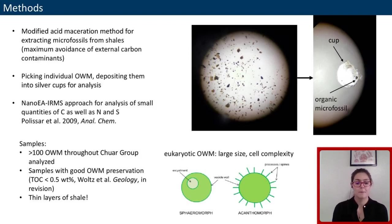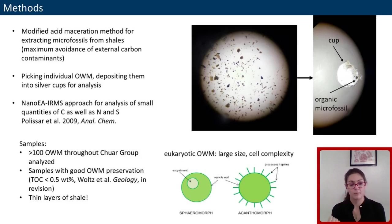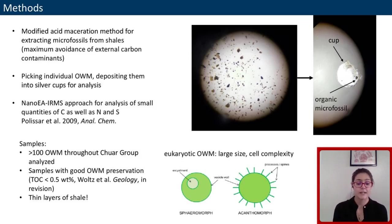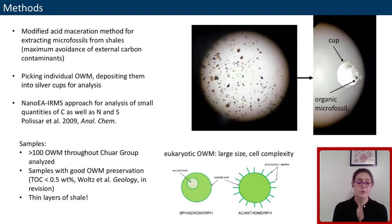Microfossils were extracted from shales throughout the Chuar succession using a modified paleontological acid maceration method to minimize contamination from external carbon sources. The acid-insoluble residue is a mix of organic-walled microfossils, bits of microbial mat, and clumps of fluffy kerogen. Out of that, individual microfossils are handpicked and placed into silver cups for analysis. Over 100 microfossils were analyzed with a nano-elemental analyzer IRMS at Syracuse.